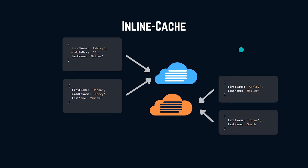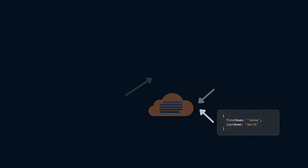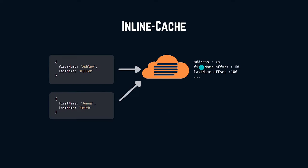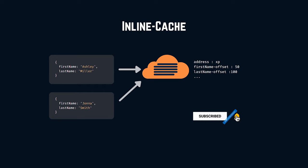These two objects have the same structure, so there will be one hidden class for them. Accessing properties from these objects becomes easier because all necessary information is in the inline cache. Since the object matches the already-saved hidden class, it helps the engine avoid overhead. For example, if the object is saved at address xp, to access the property firstName you just need to use an offset of 50. There can be a lot of information helpful for subsequent runs of the same type of object.